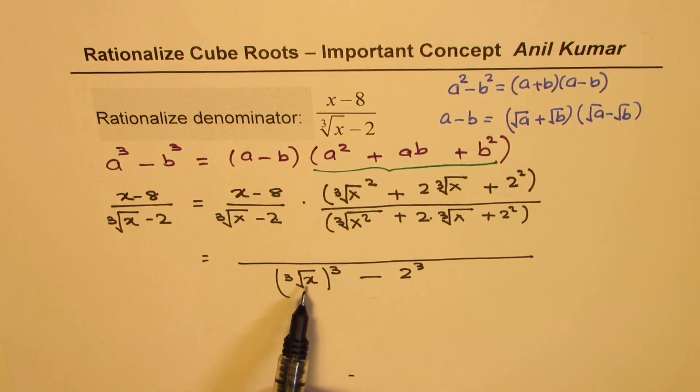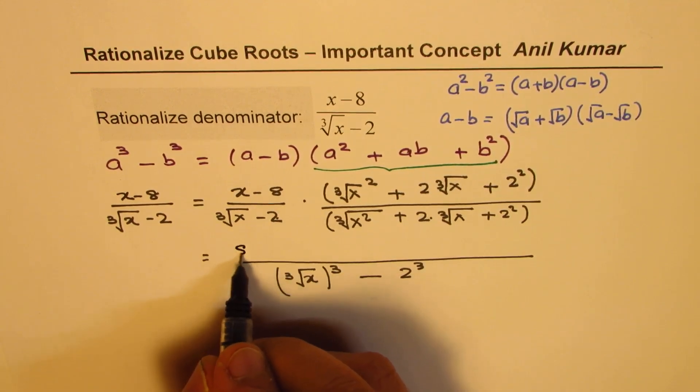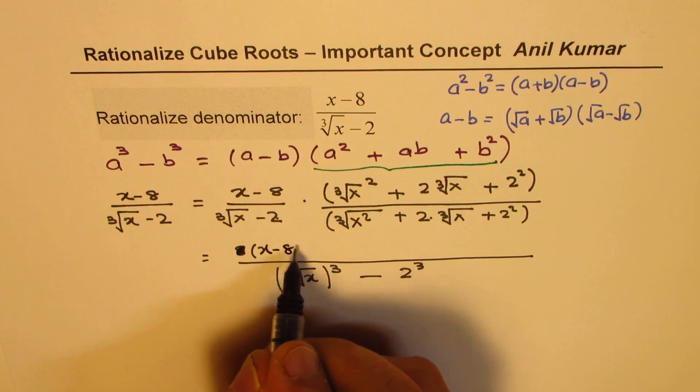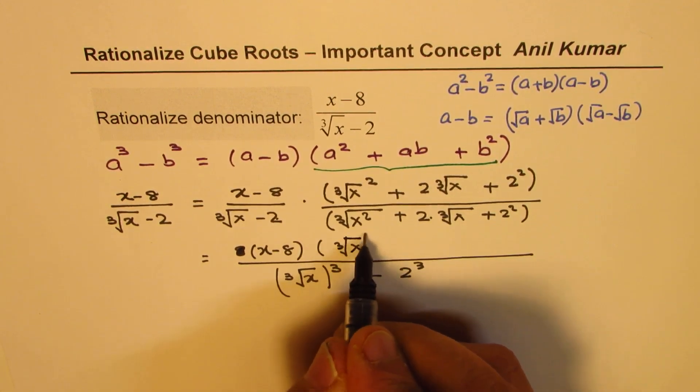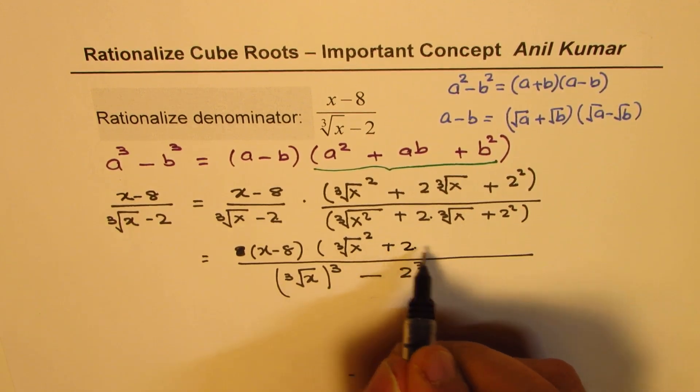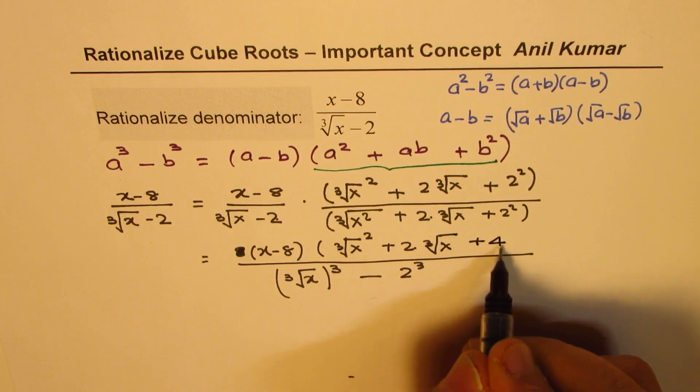In the numerator, we have the factor, let me write this as x minus 8 times cube root of x square plus 2 times cube root of x plus 4, right?